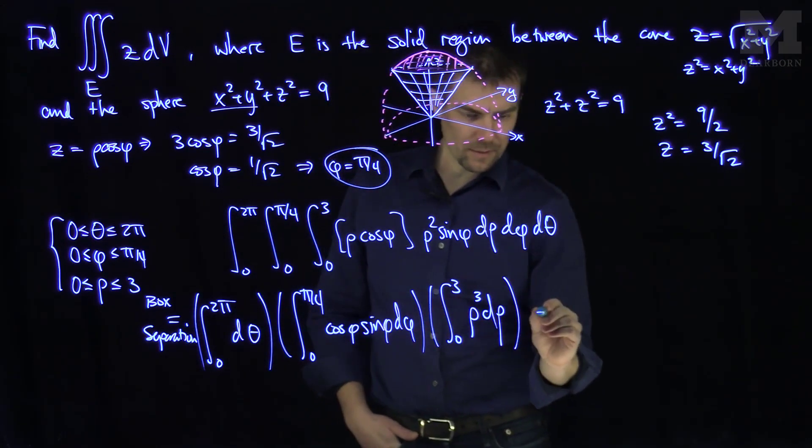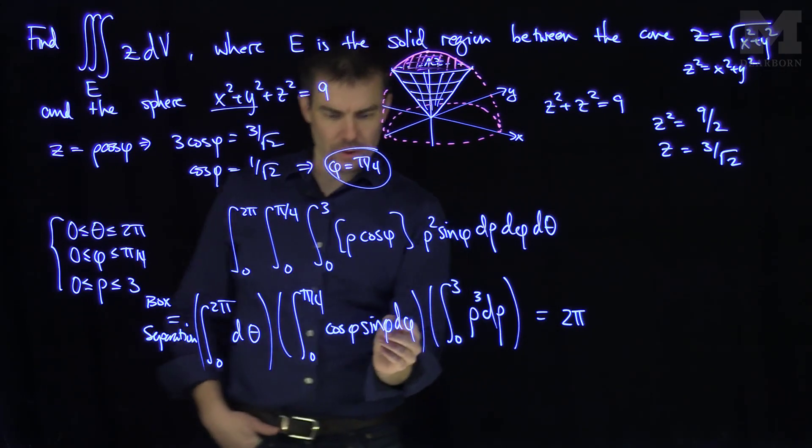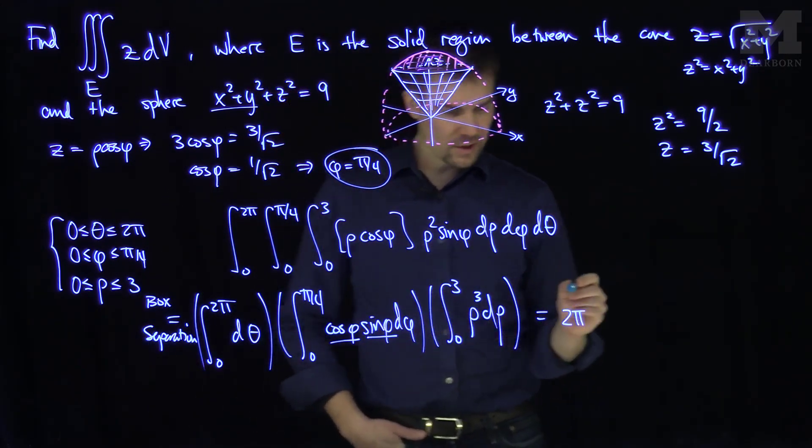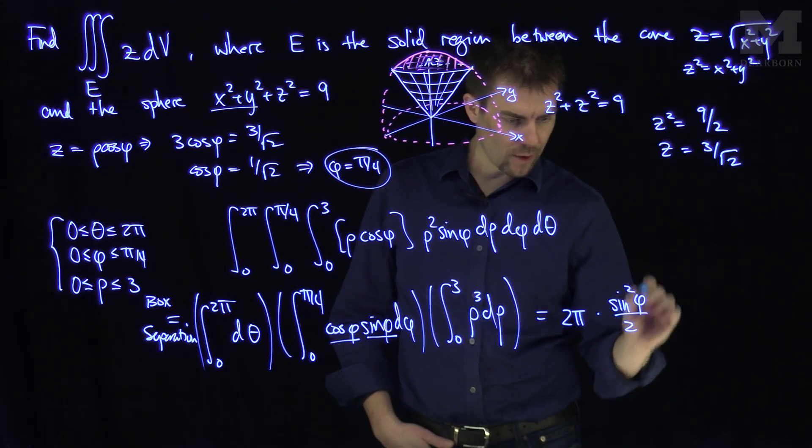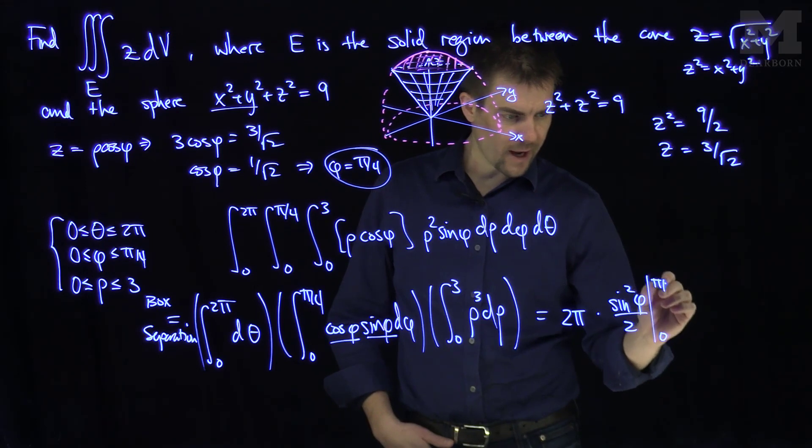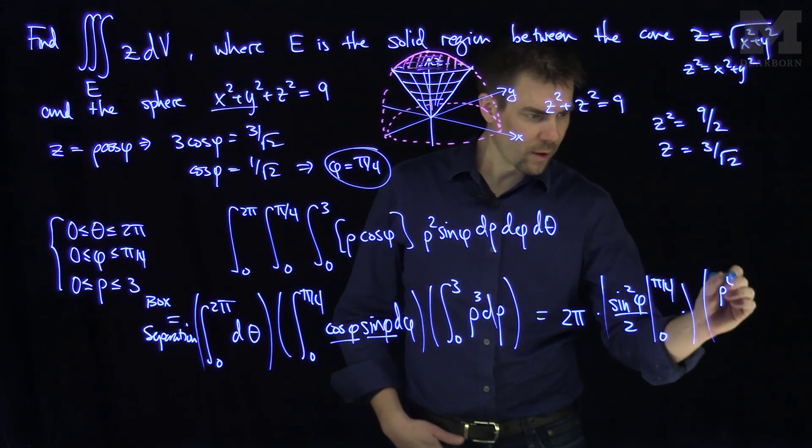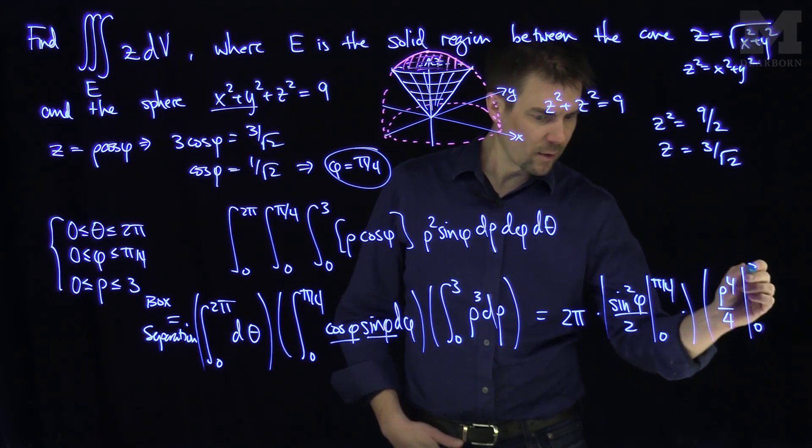So the first integral over here is going to give me a 2 pi. Then this function over here, the derivative of sine is cosine, so this is a perfect antiderivative. This is going to be what? This will be sine squared of phi over 2, evaluated from 0 to pi over 4, times rho to the fourth over 4, evaluated from 0 up to 3.